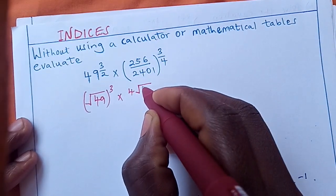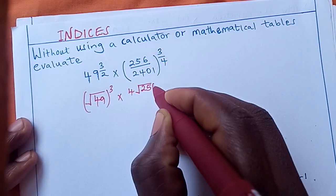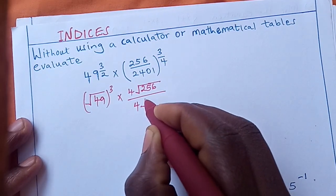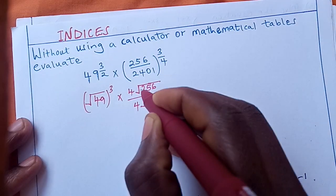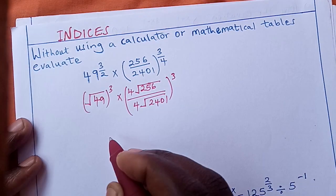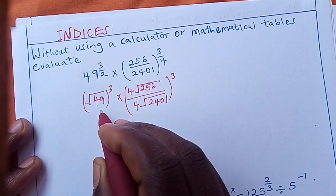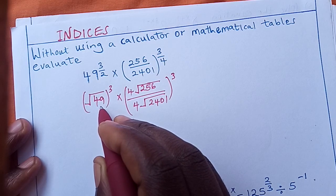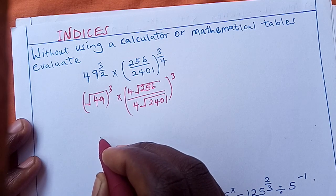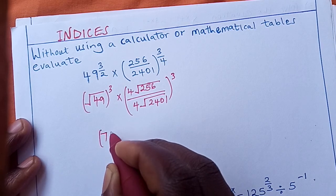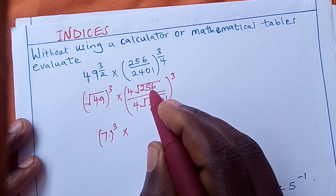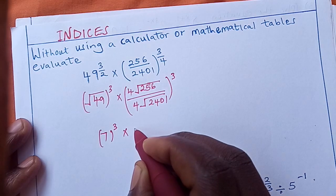We find the fourth root of 256 over the fourth root of 2401, then we raise the result to power 3. The square root of 49: two numbers you can multiply to get 49 are seven and seven, so we take seven.